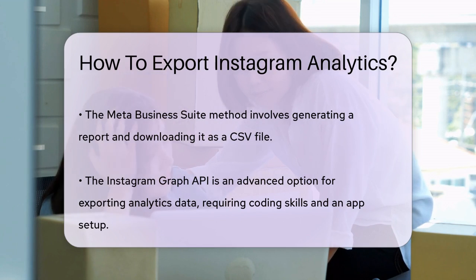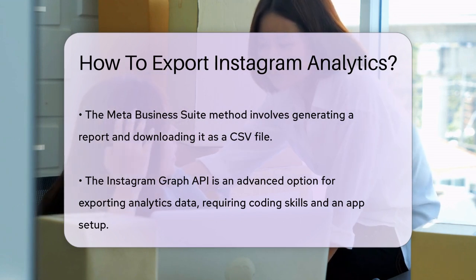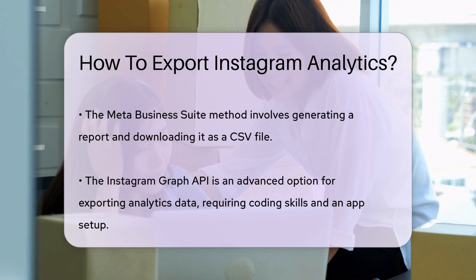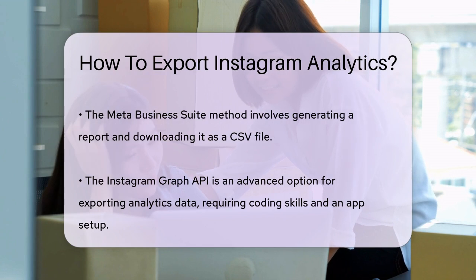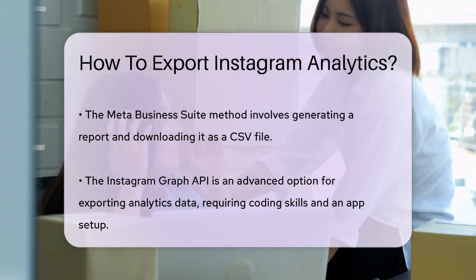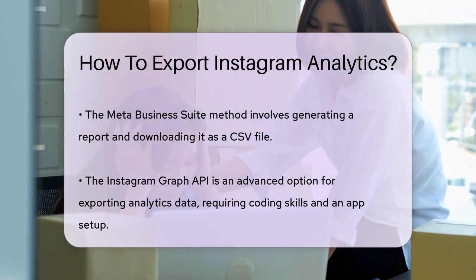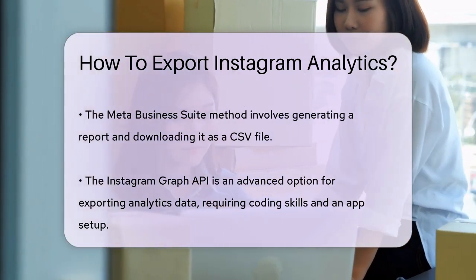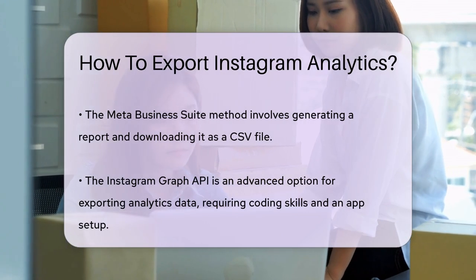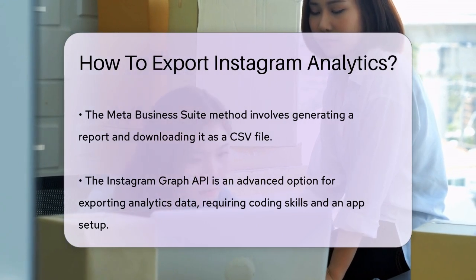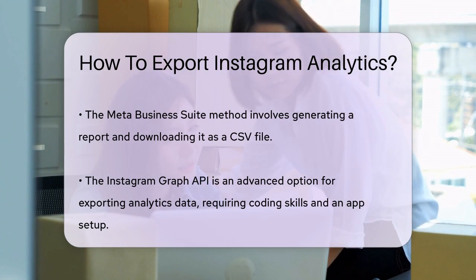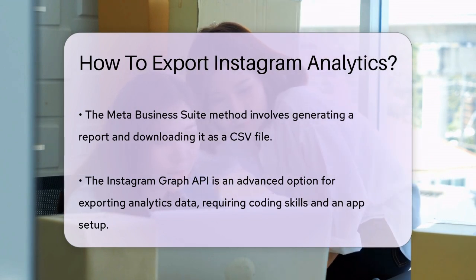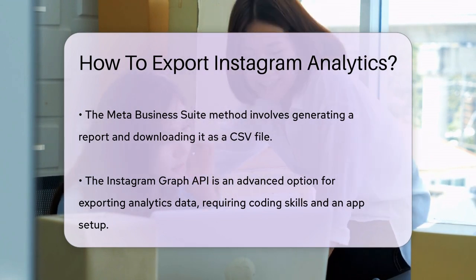Using the Instagram Graph API. For those with technical skills, the Instagram Graph API offers a more advanced way to export analytics data. This method requires coding and setting up an app on the Facebook developer site to obtain an access token. Create an app on the Facebook developer site and get an Instagram access token. Use the API endpoint to fetch Insights data. You can then parse the data and store it in a spreadsheet or database.